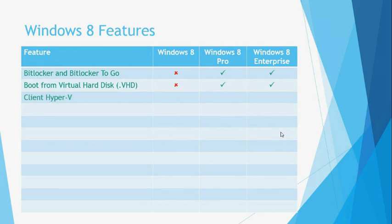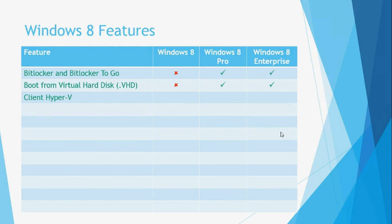The next feature to consider is Client Hyper-V. Hyper-V is Microsoft's own virtualisation product. With Hyper-V, you can create multiple instances of an operating system on the same physical computer and run them side by side at the same time. Hyper-V was first introduced in Windows Server 2008 and has been included with every Microsoft Server OS released since. Until now, Hyper-V has never been included with any Microsoft client operating system. With Windows 8, Microsoft has decided to include it on a client OS for the very first time. However, it is only available for the 64-bit versions of Windows 8 Pro and Windows 8 Enterprise.